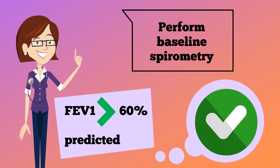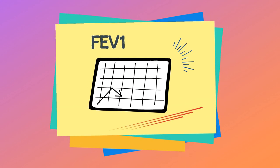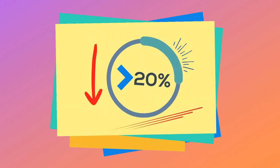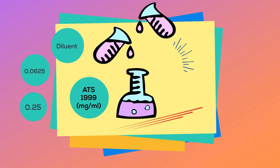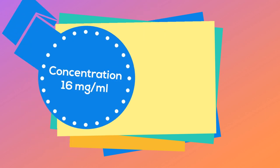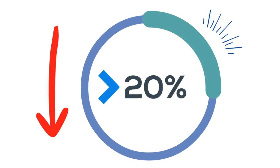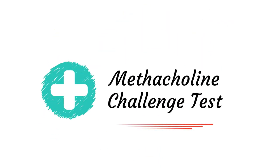If the FEV1 is greater than 60% predicted, the next step is to give the patient an inhalation of diluent and review the FEV1 again on spirometry. If it decreases by 20%, you stop. If it does not, you continue giving incremental doses of methacholine until you reach the maximum concentration of 16 milligrams per milliliter or a dose of 400 micrograms. If at any time the FEV1 falls by 20%, you have a positive methacholine challenge test.